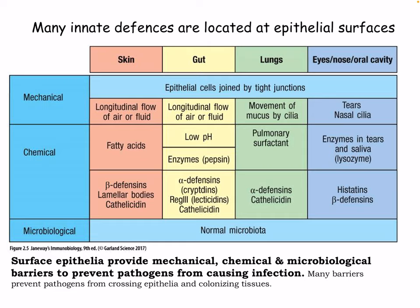In the lungs, we have pulmonary surfactant, which plays a role in immunity, and alpha-defensins. In the eyes and oral cavity, we have enzymes in tears and saliva like lysozyme, which can break down bacteria. We also have histatins and beta-defensins. This is not all critical to memorize, but good to keep in mind.